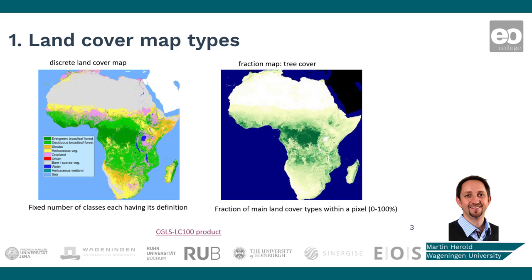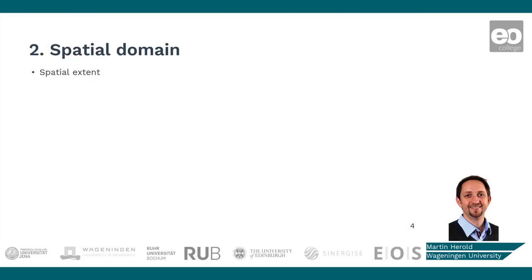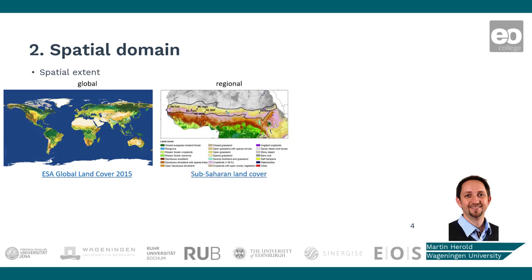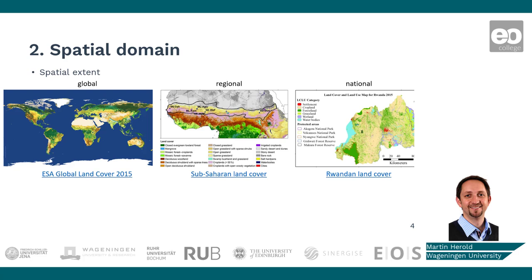An example is the product of the Copernicus Global Land Cover Service, with a link provided in the slide. In terms of the spatial domain, land cover maps are produced at different spatial extents. On one hand, we have global land cover maps that provide a consistent global representation of land cover, all the way to regional — for example, continental scale — or national land cover datasets. National land cover datasets often have very specific classes important for that country's characteristics, and they tend to be of higher quality, while global maps aim to be globally consistent and cover the full variety of land cover types.